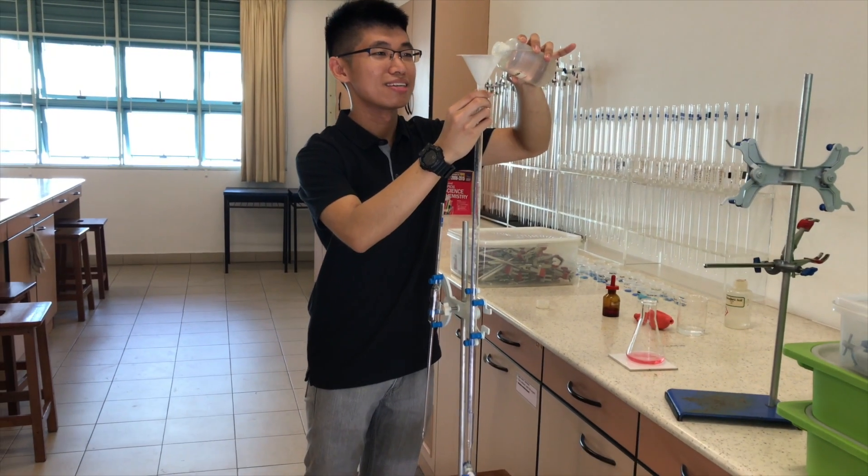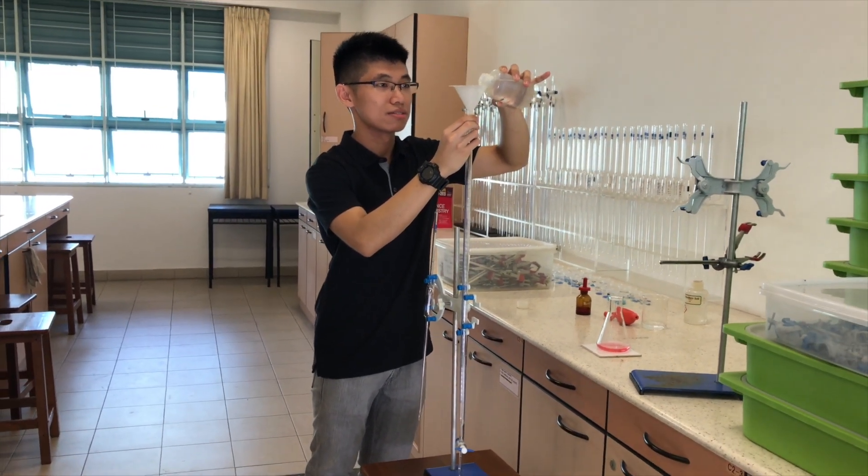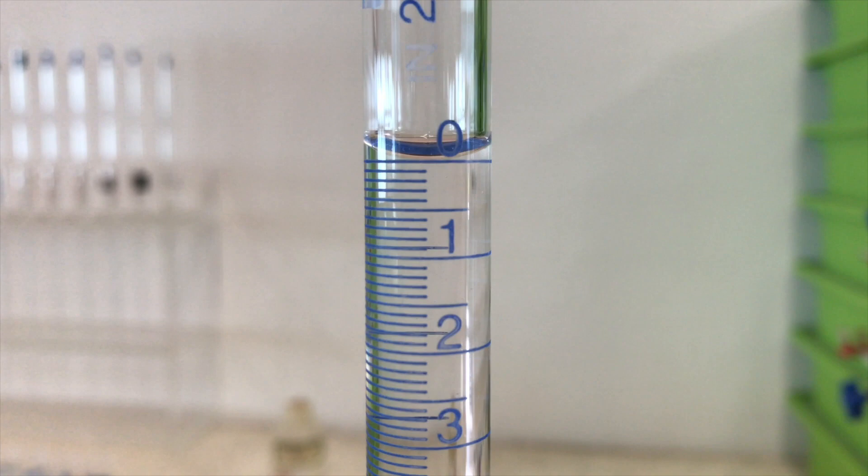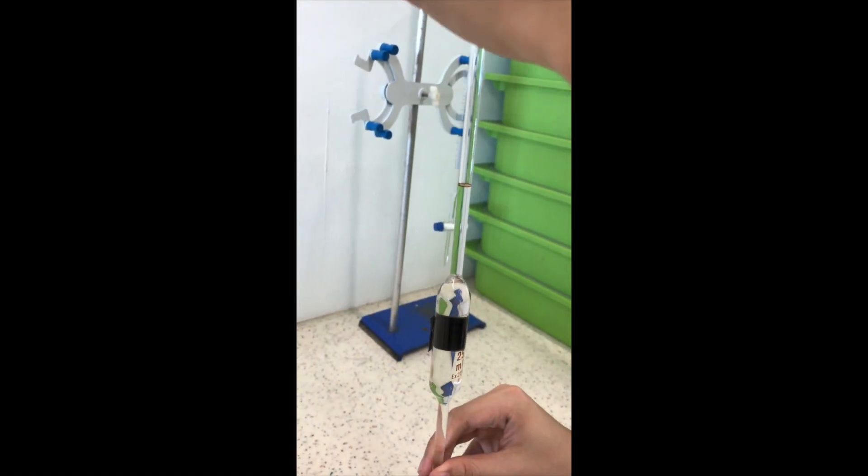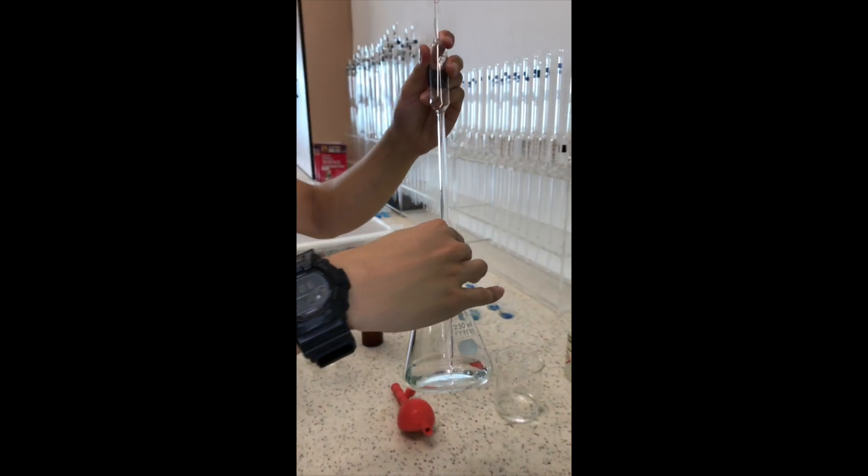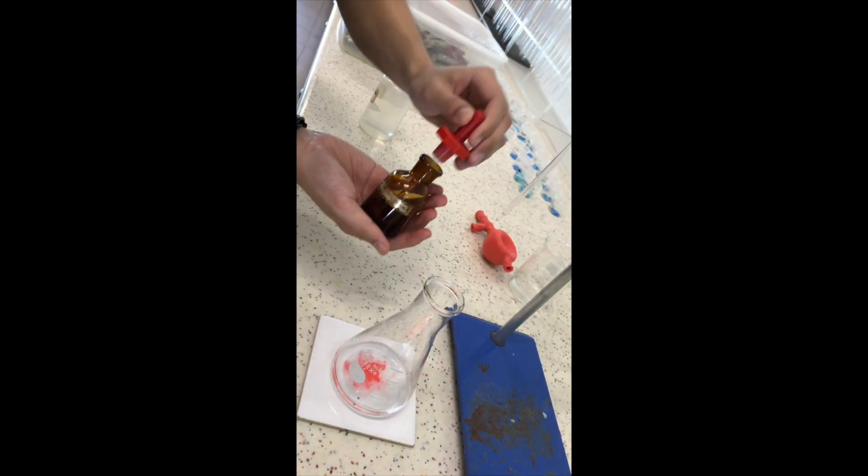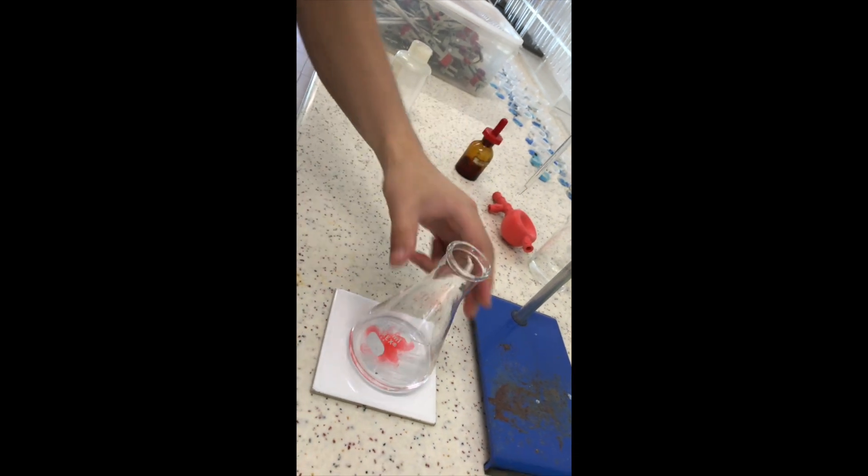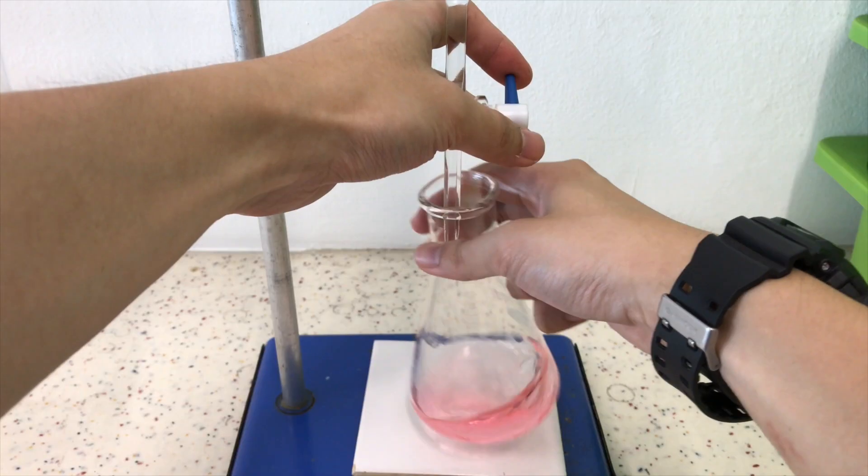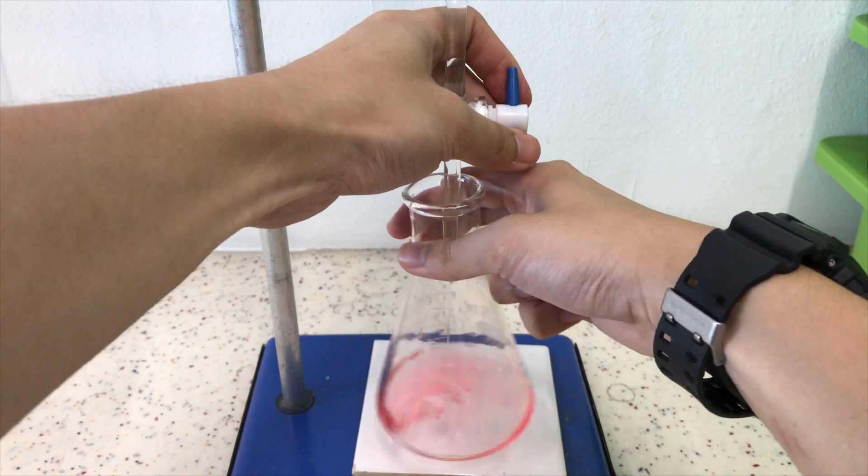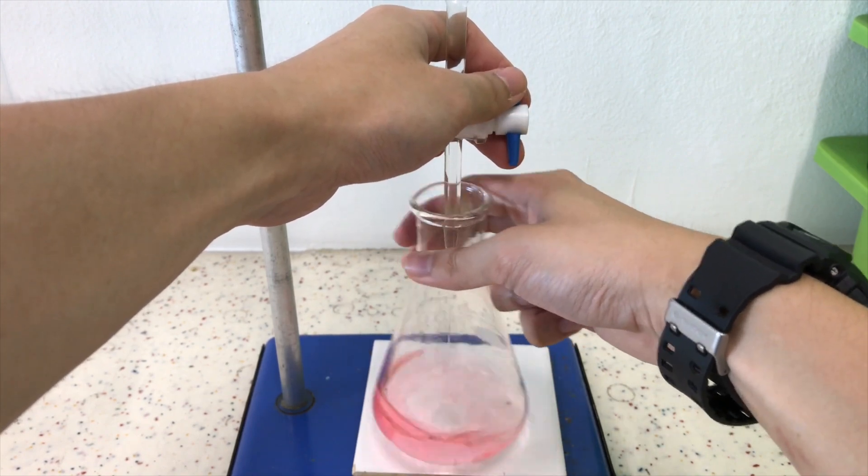Step one: we fill a burette with sodium hydroxide and take note of the initial reading. We will pipette a fixed volume of acid into the conical flask, usually we use 25.0. Always remember to add the indicator because that will tell us how much of the alkali we will need for complete neutralization.